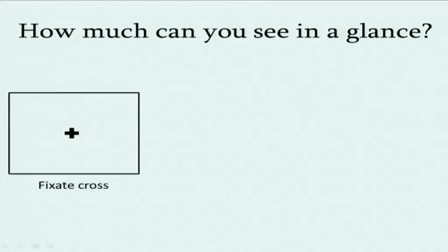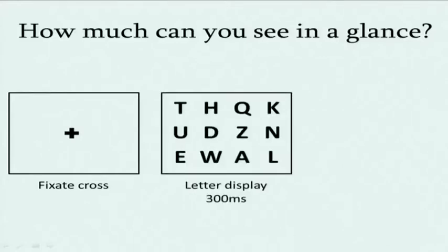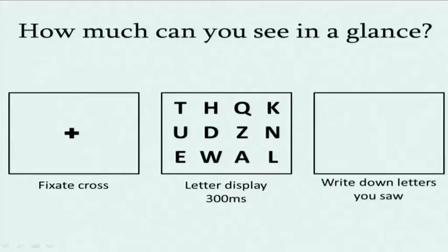So on the next slide, you're going to see a cross. I'd just like you to look at that cross. And then shortly afterwards, a display of 12 letters is going to flash up on the screen for a short amount of time, just long enough for you to get a single glance at those letters. And then I'd just like you to write down, or if you don't have a pen, just keep in your mind the letters that you saw.